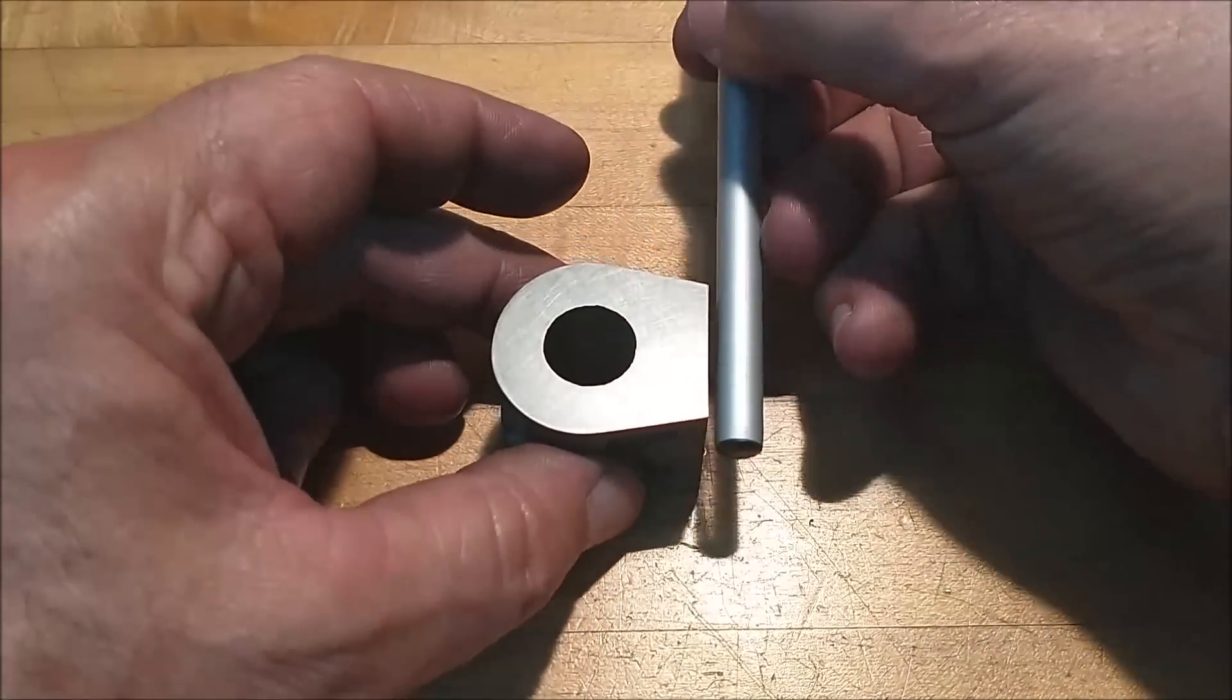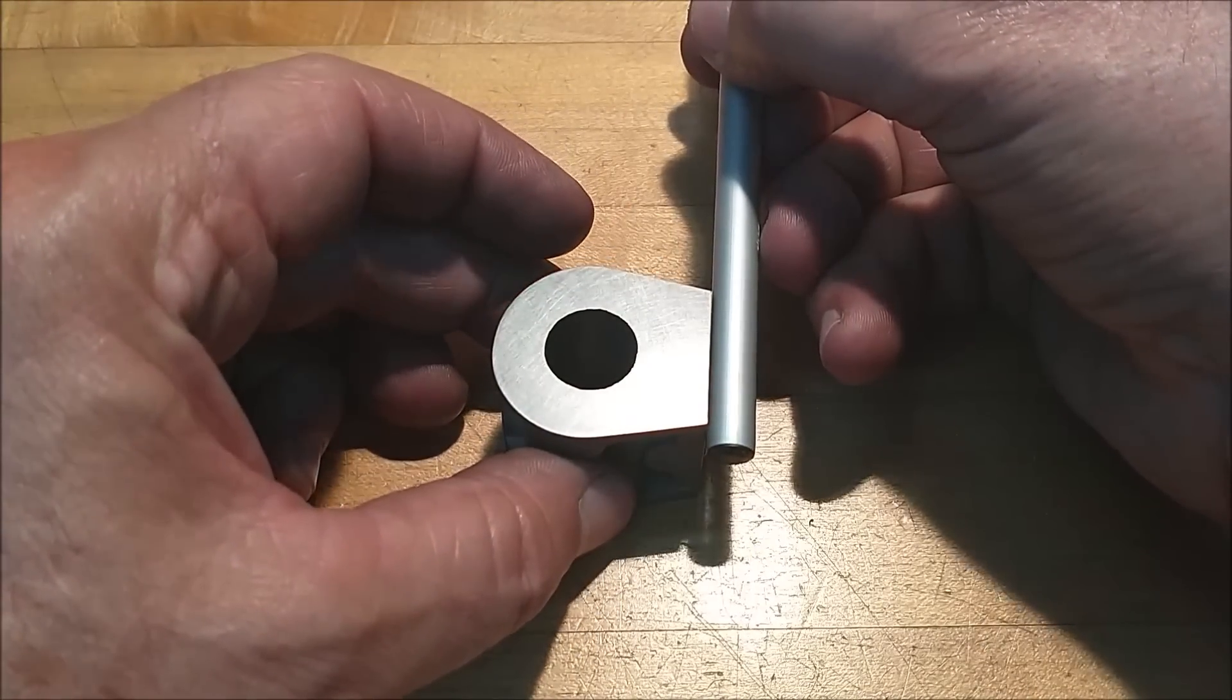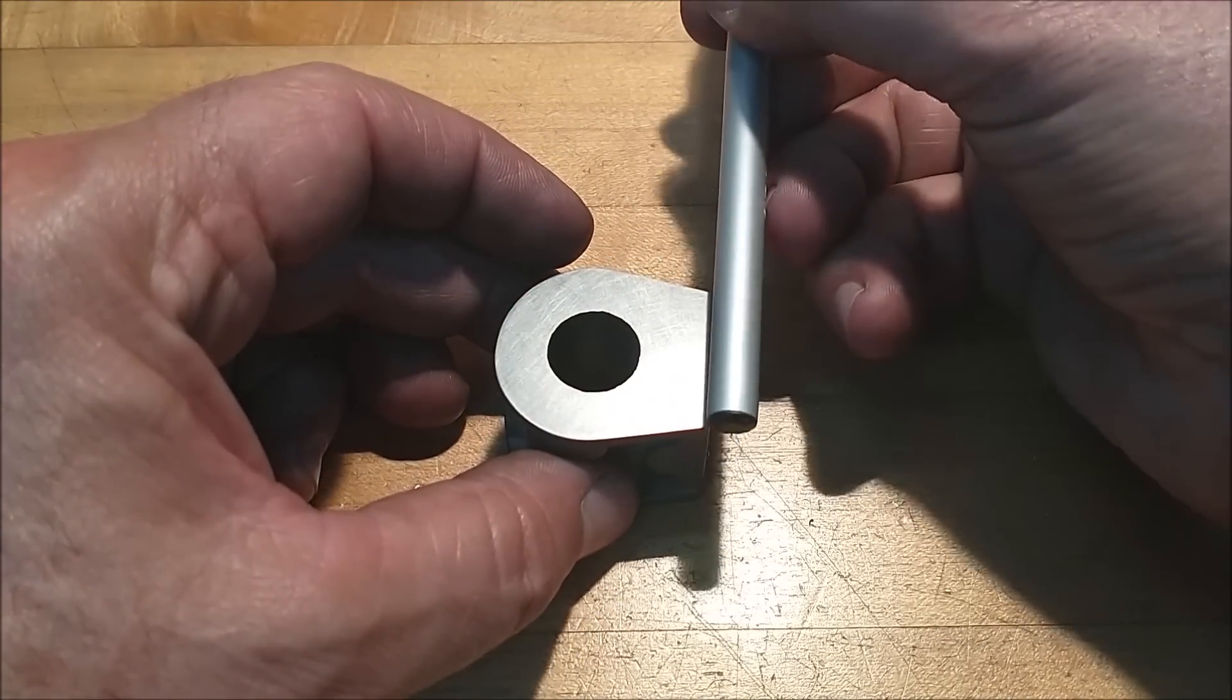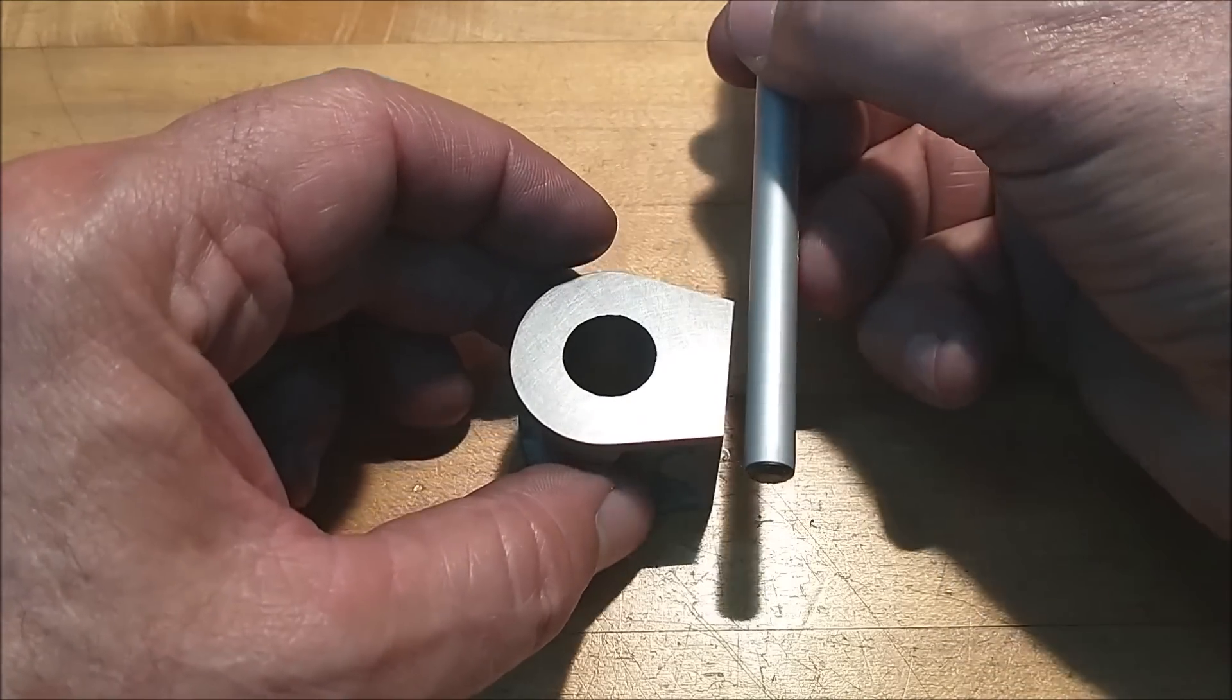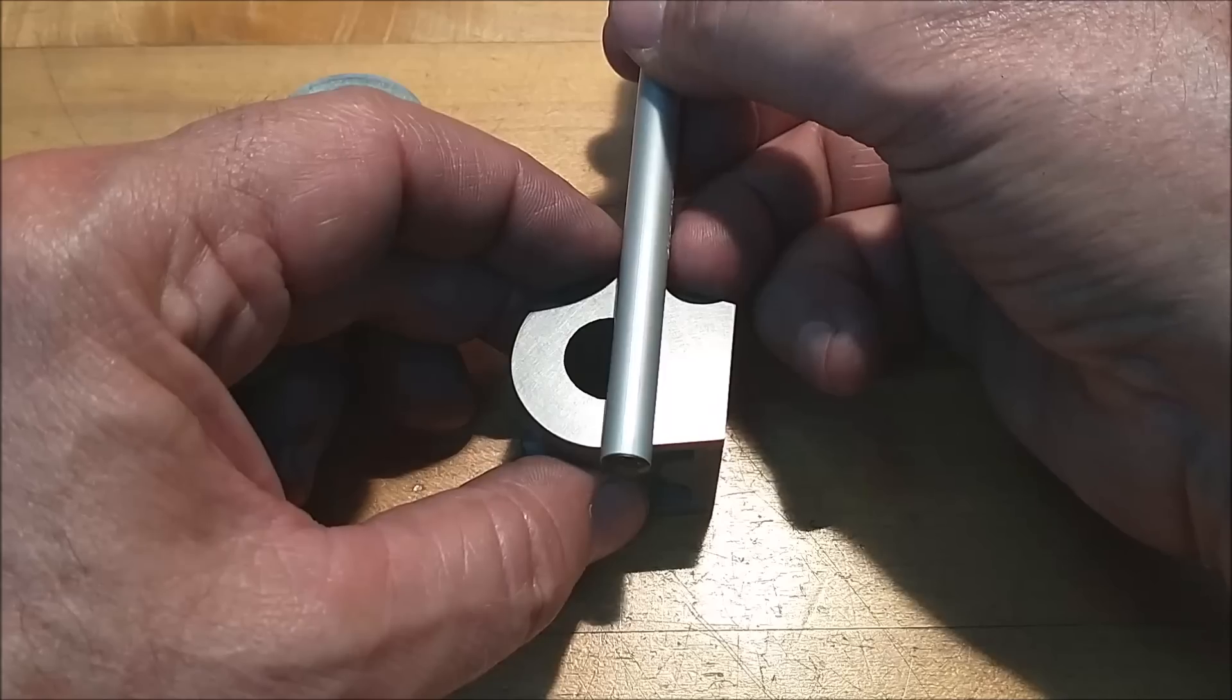There is a very specific center line from the steam chest gasket surface to the center of the bore. So that's an easy one to find - simply edge find it, move over, and there you go.